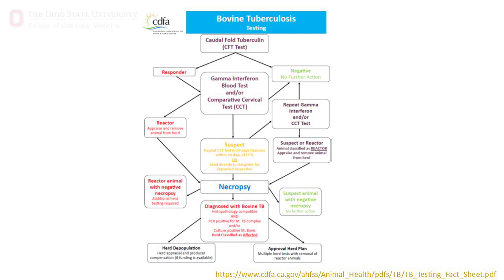The California Department of Food and Agriculture created a detailed flow chart outlining specifics of the testing process. As you can see, there is not a single test to diagnose an animal with TB. It is important for you and your clients to understand that the testing process is complex and that a responder to the caudal fold test — the test that you will be doing as an accredited veterinarian — does not indicate, nor should it be interpreted as, a positive animal.